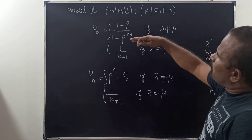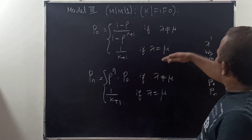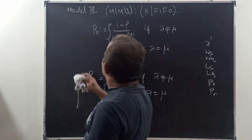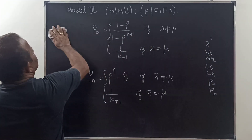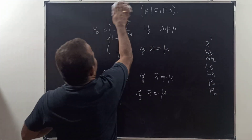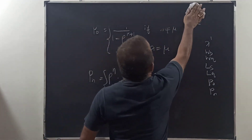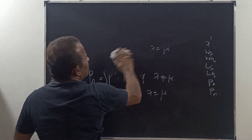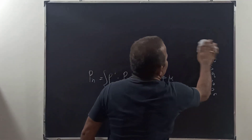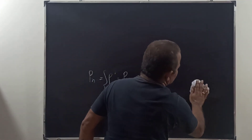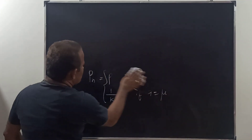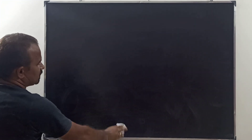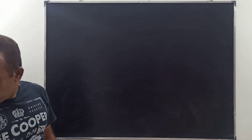So in Model 3, we have to see all those things — P0, Pn, lambda-dash (effective rate of arrival), Ws, Wq, and Lq. We will now see the example.